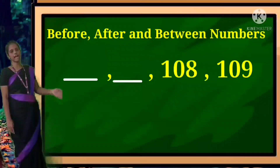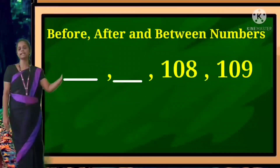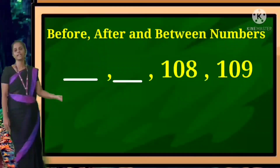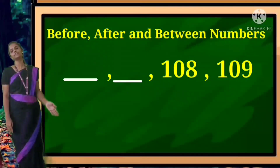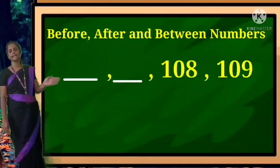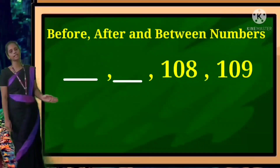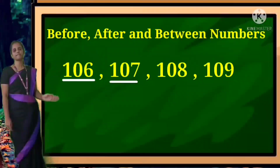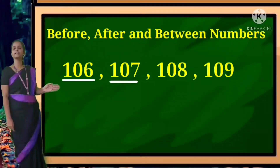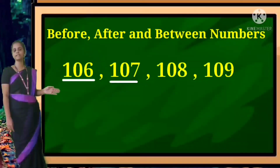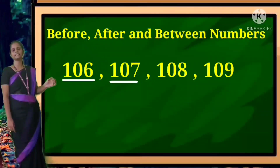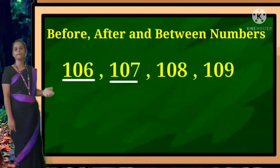Next example: dash, dash, one hundred and eight, one hundred and nine. Before one hundred and eight comes one hundred and seven. And the dash before that is one hundred and six. These are the two examples for before number.